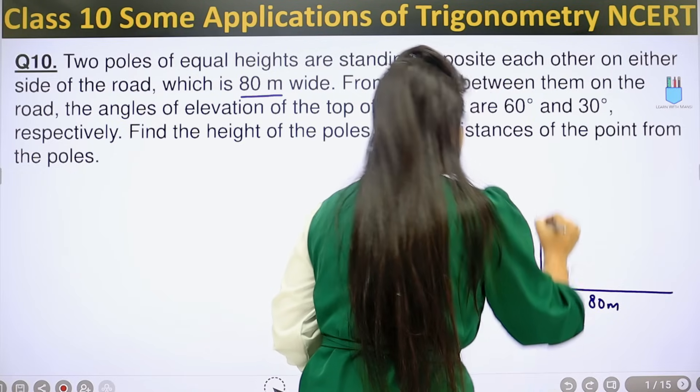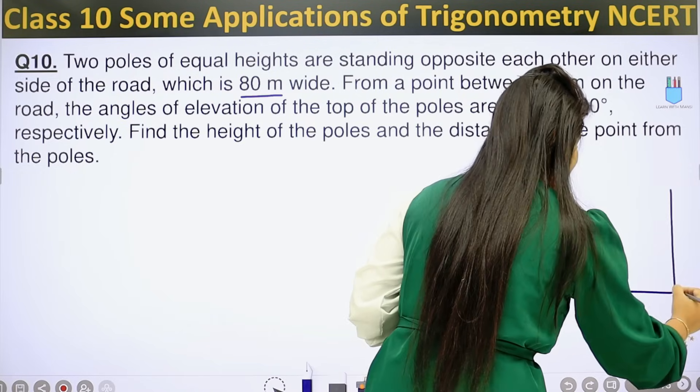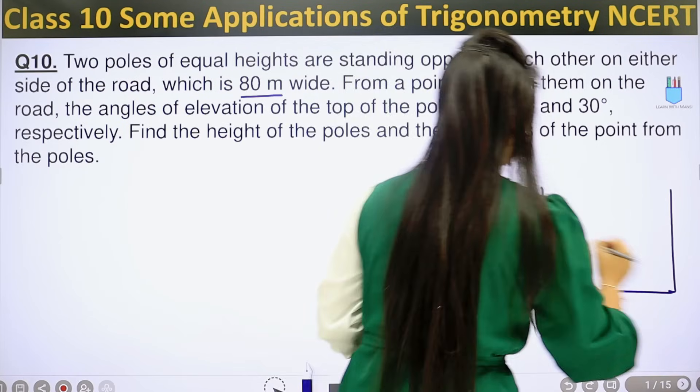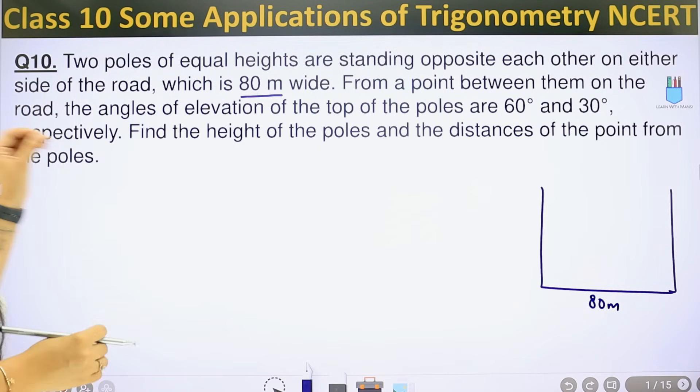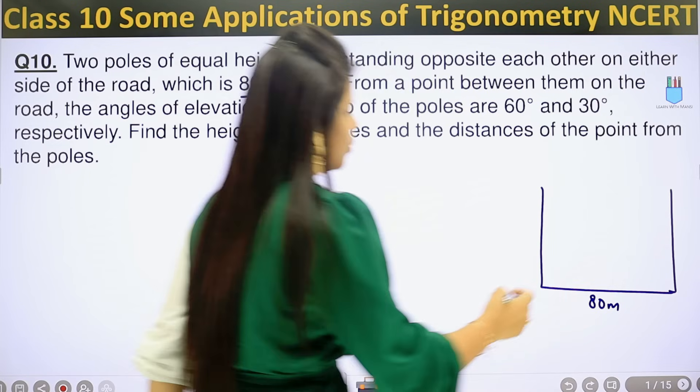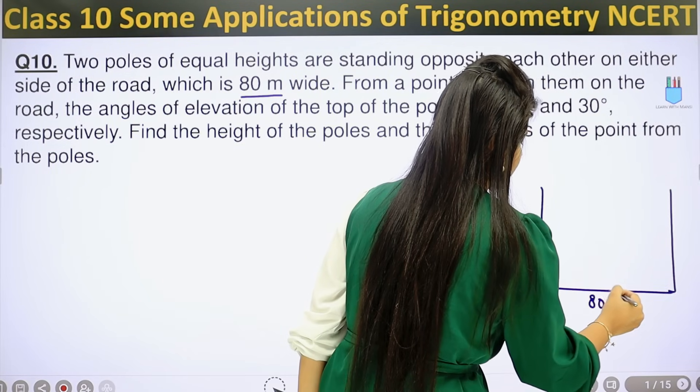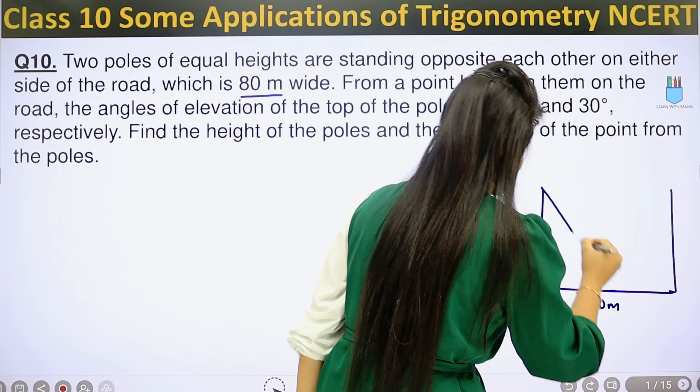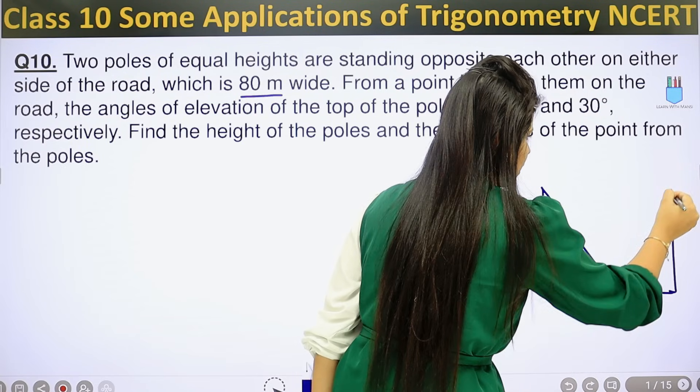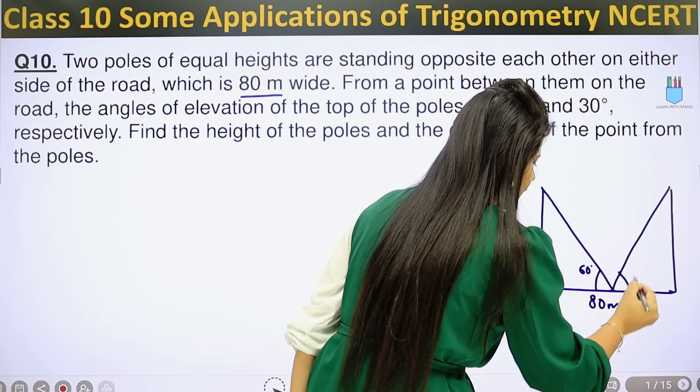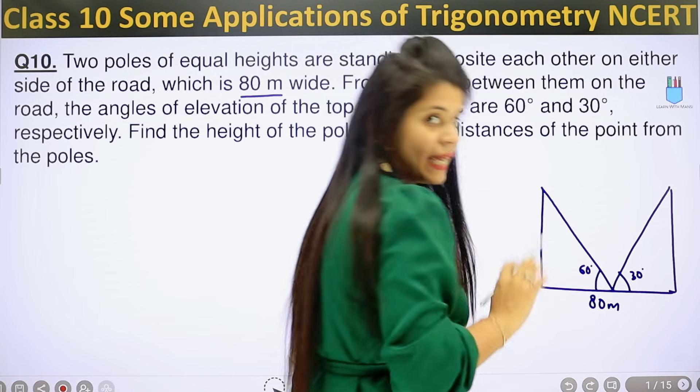So we have a gap in the road. Let's suppose this road is 80 meters wide. Two poles are standing opposite sides with equal height. From a point between them on the road, the angle of elevation of the top of the poles are 60 degrees and 30 degrees. So here we have a point. From this point, this angle is 60 degrees. From this point, this angle is 30 degrees.